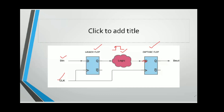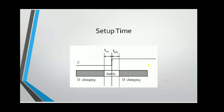The capture flip-flop has to capture the exact data that the launch flip-flop is sending. If there is a hold time violation — where data is changing before the active clock edge, that is a setup time violation — similarly, if the data is not stable after the clock edge for some duration, there are chances of hold time violation. The data needs to remain stable for some duration after the clock edge arrives.